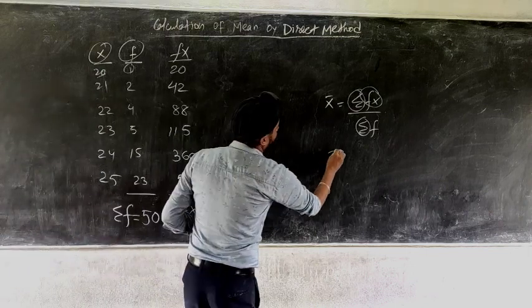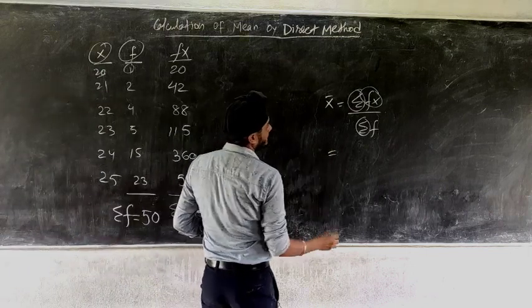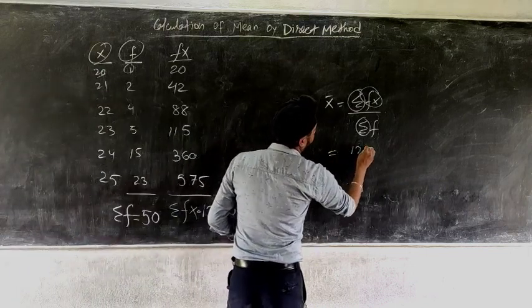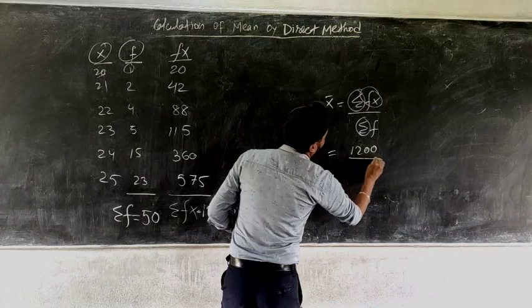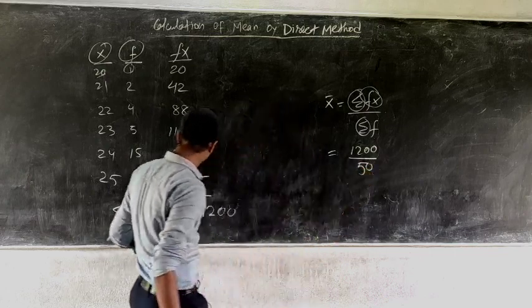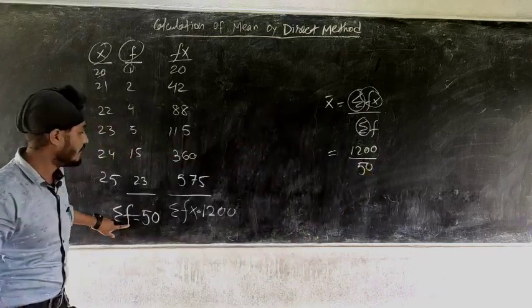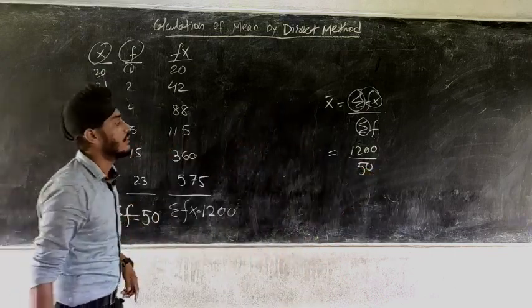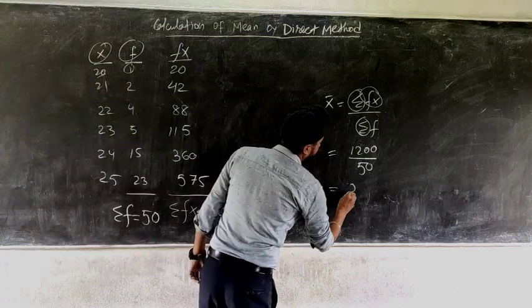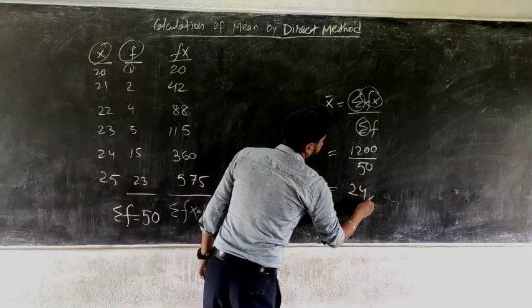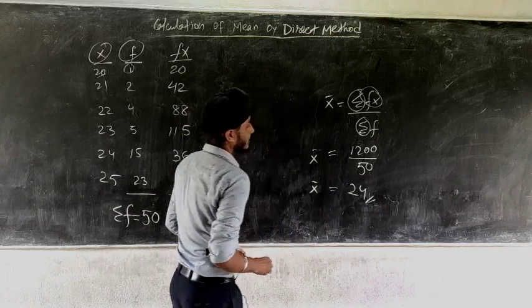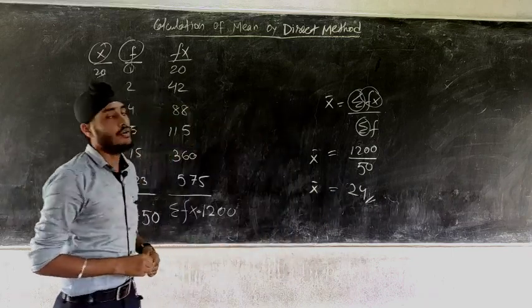Let us substitute the values. Σfx is 1200 and Σf is 50. When we divide 1200 by 50 we get 24. So mean equals 24.